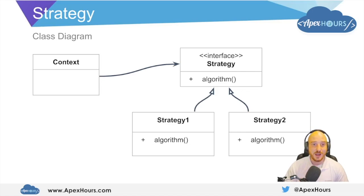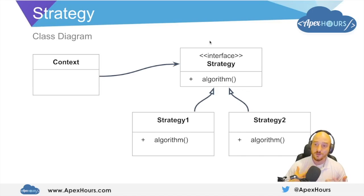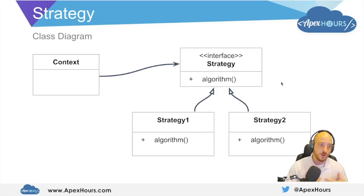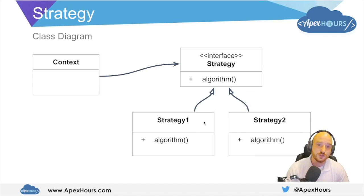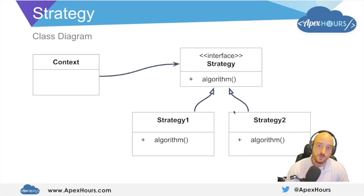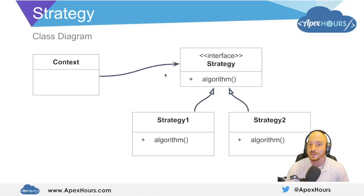Here you'll see the class diagram for the strategy pattern. There are a few key concepts here. We'll always start off with some context, and that context depends upon an interface — we call this interface the strategy. This interface has a void method called algorithm. The actual implementation details of the interface don't matter; what matters is that we have an interface which specifies the method signature for an algorithm that we can choose. Then we'll have multiple concrete strategies that implement the strategy interface — strategy one, strategy two — and the context will choose the strategy that it needs at runtime and call its implementation of the algorithm.